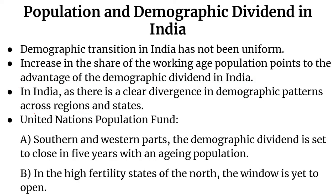Regarding population and demographic dividend in India, the population parameters indicate that the demographic transition in India has not been uniform. Although population growth is set for a slowdown, an increase in the share of the working age population points to the advantage of the demographic dividend in India, meaning the growth rate of the working population is higher than the general population. The demographic dividend can last for 40-50 years, but countries can benefit only if they use it effectively; otherwise it can turn into a demographic burden.